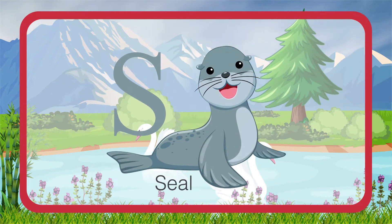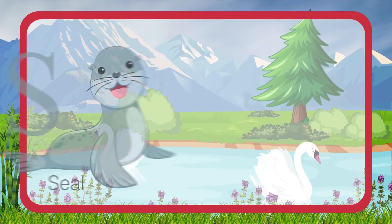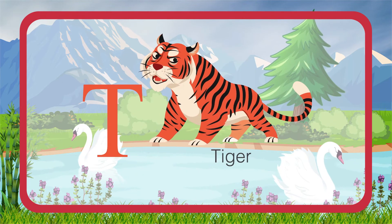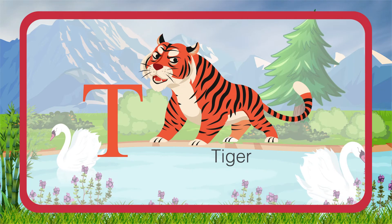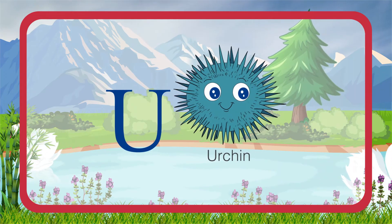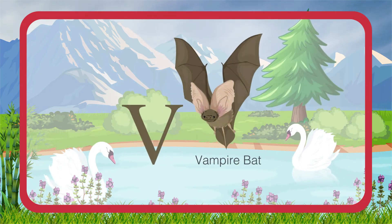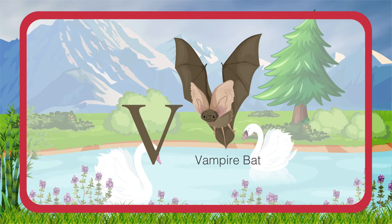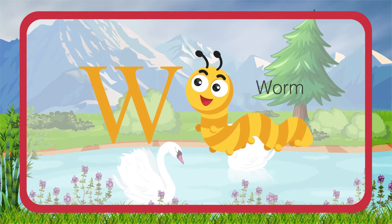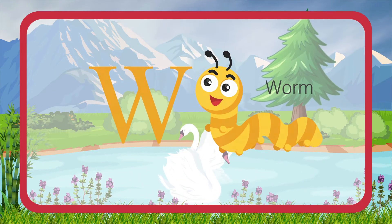S is for Seal. T is for Tiger. U is for Urchin. V is for Vampire Bat. W is for Worm.